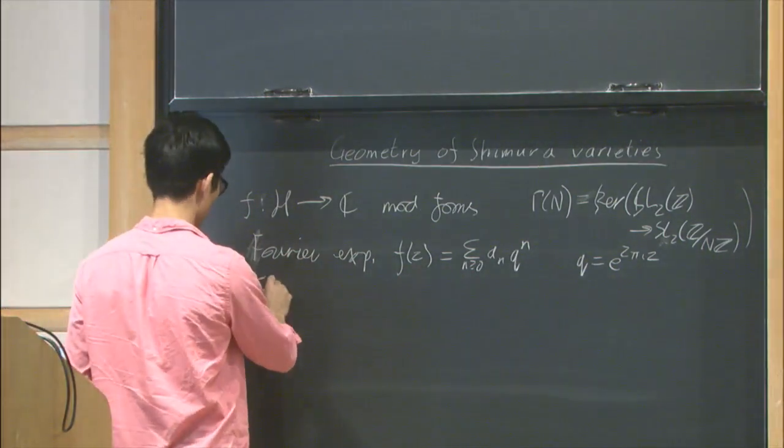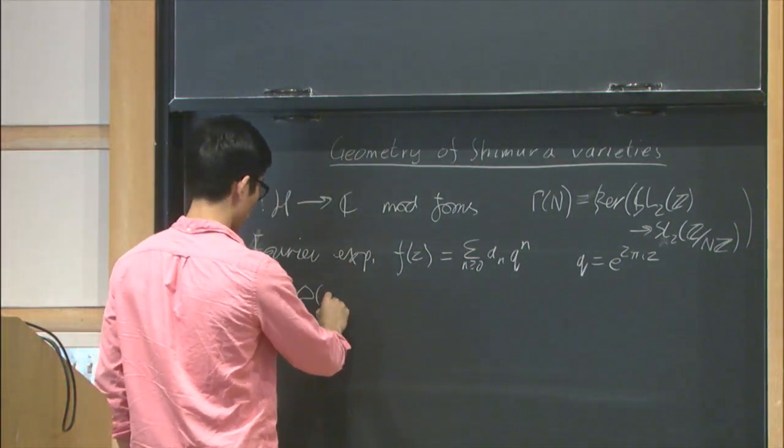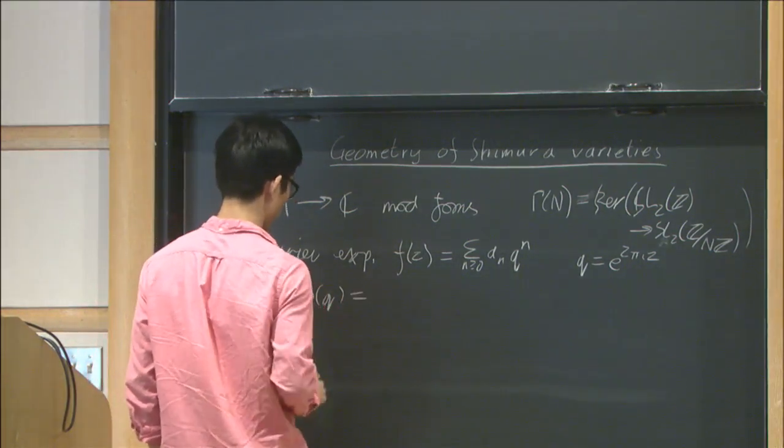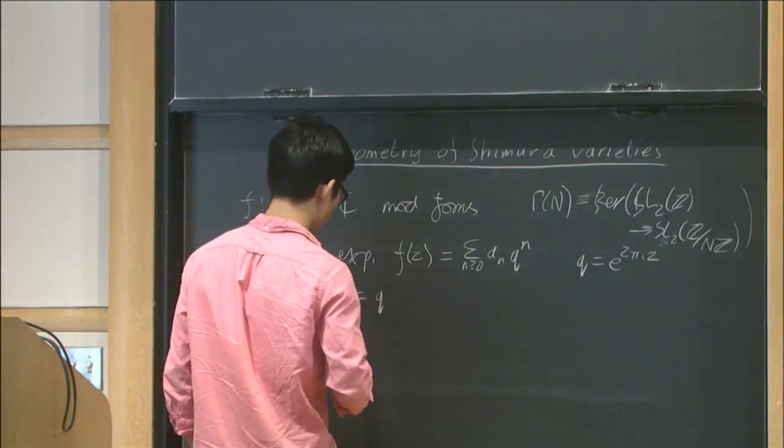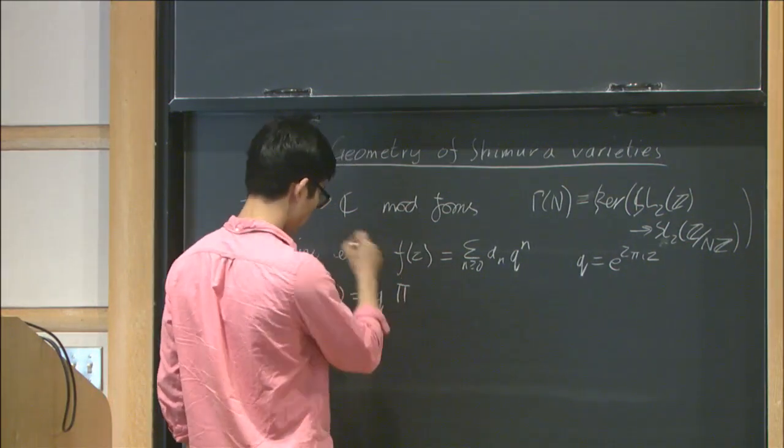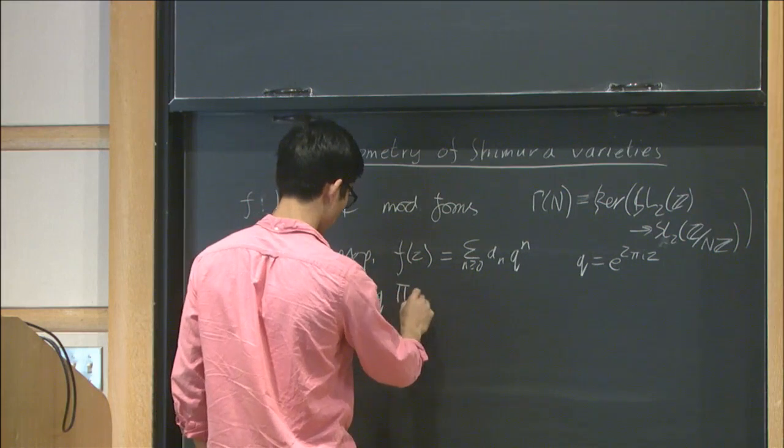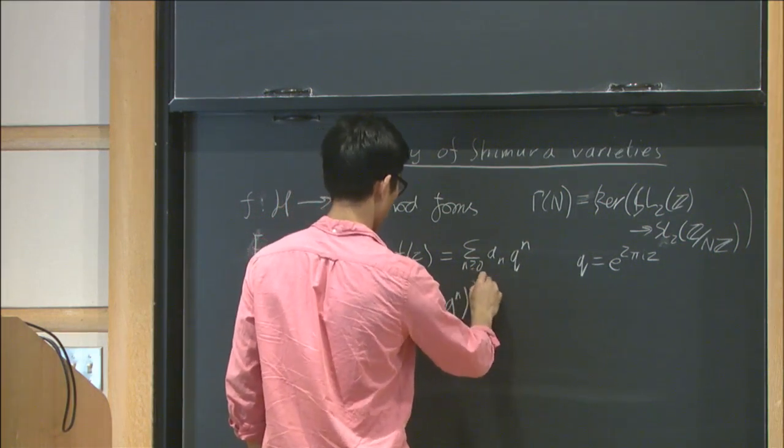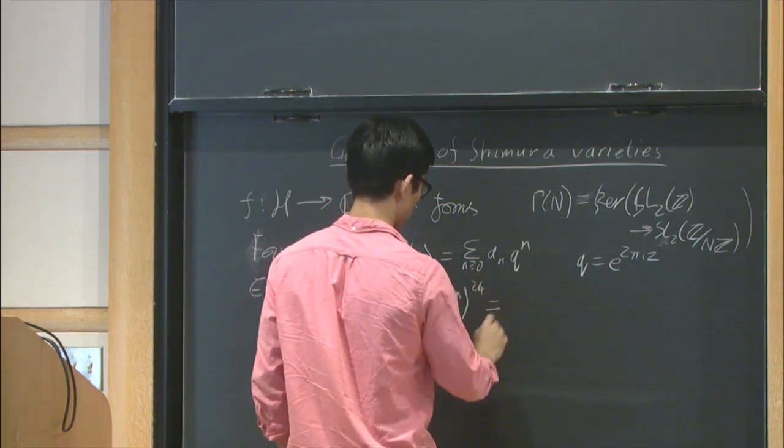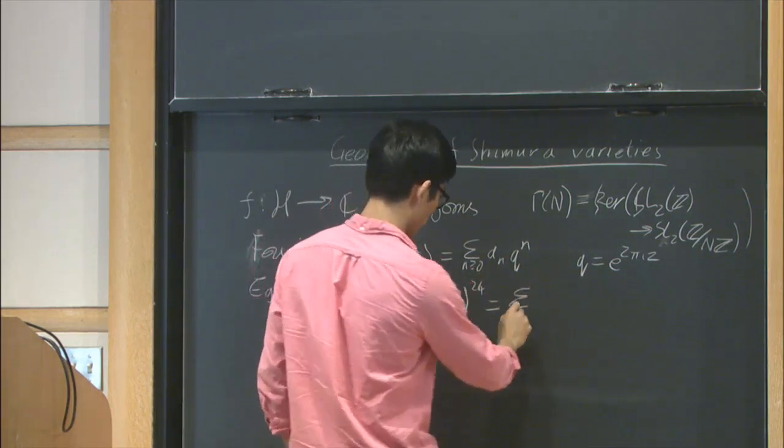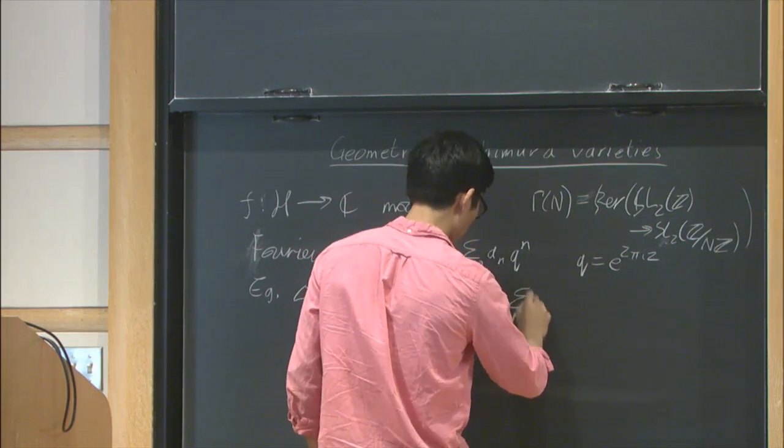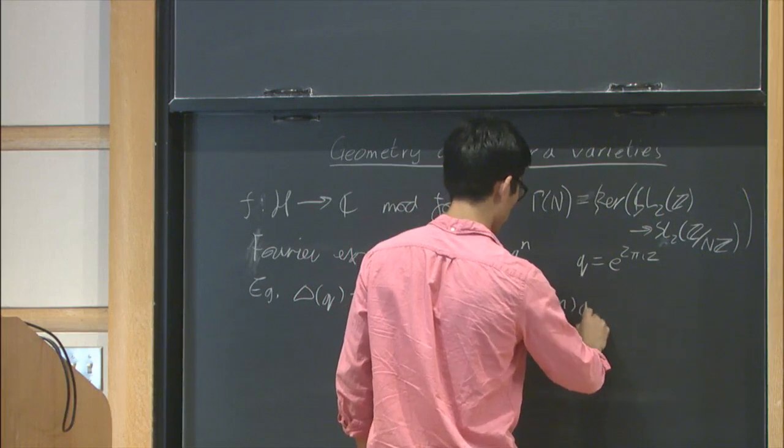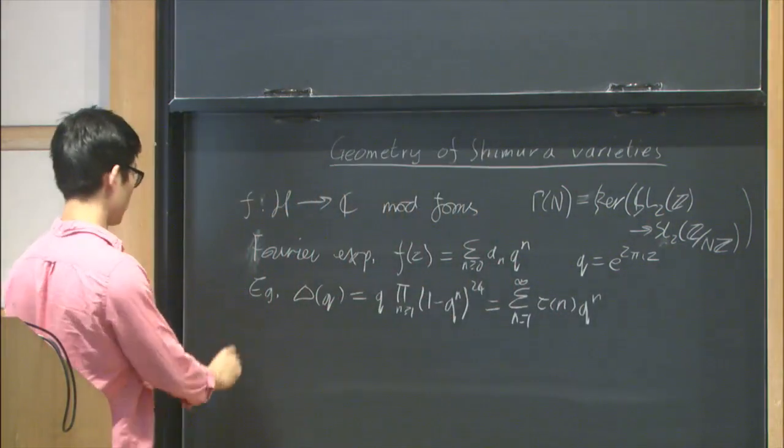For example, if you look at this unique weight 12 cusp form, which is Ramanujan's delta function, given by q times the product n greater equal to 1 of (1 minus q to the n) to the power 24, this equals sum from n equals 1 to infinity of τ(n) q to the n, where this τ is Ramanujan's tau function.